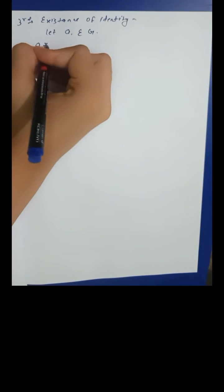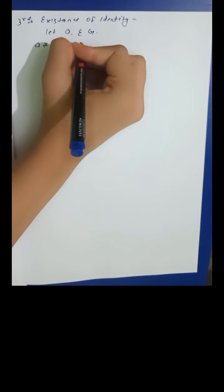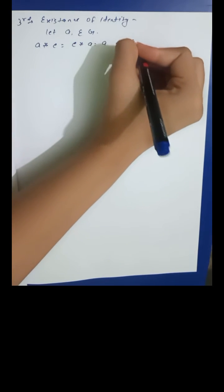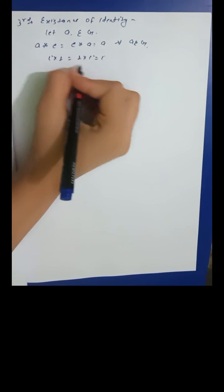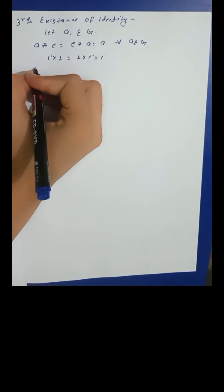The third property is existence of identity: there exists e in G such that a★e = e★a = a for all a in G. Here, iota×1 = 1×iota = iota. LHS and RHS are both equal, so the identity element (e = 1) exists.